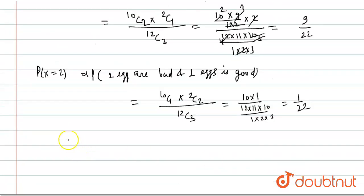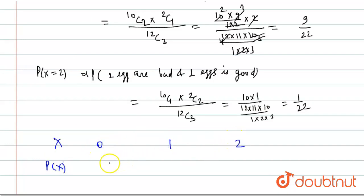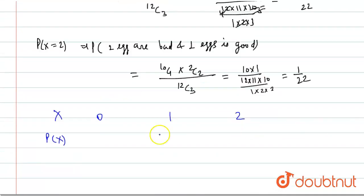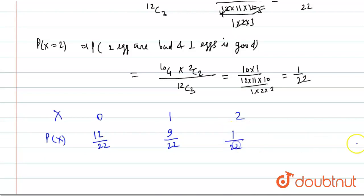The probability distribution table is as follows: X takes values 0, 1, and 2. P(X) for X = 0 is 12/22, for X = 1 is 9/22, and for X = 2 is 1/22.